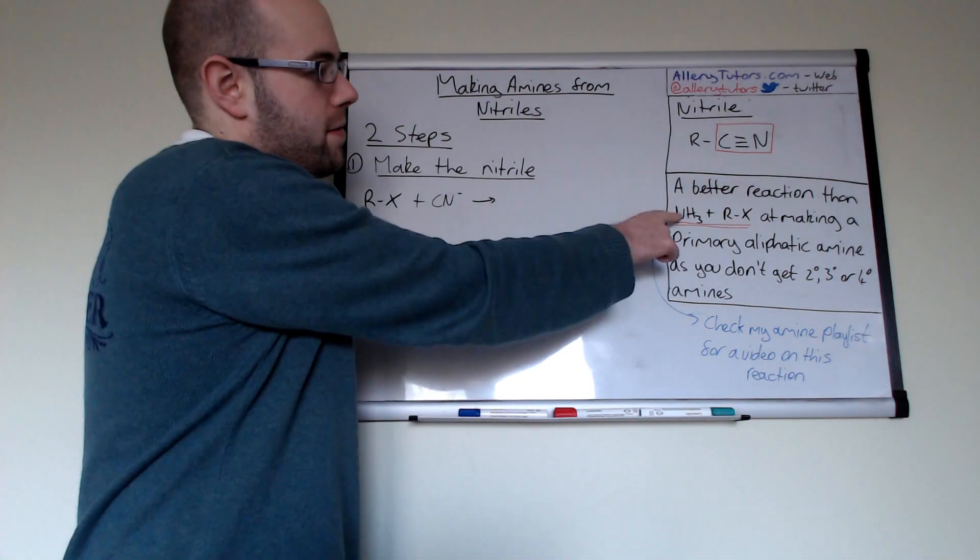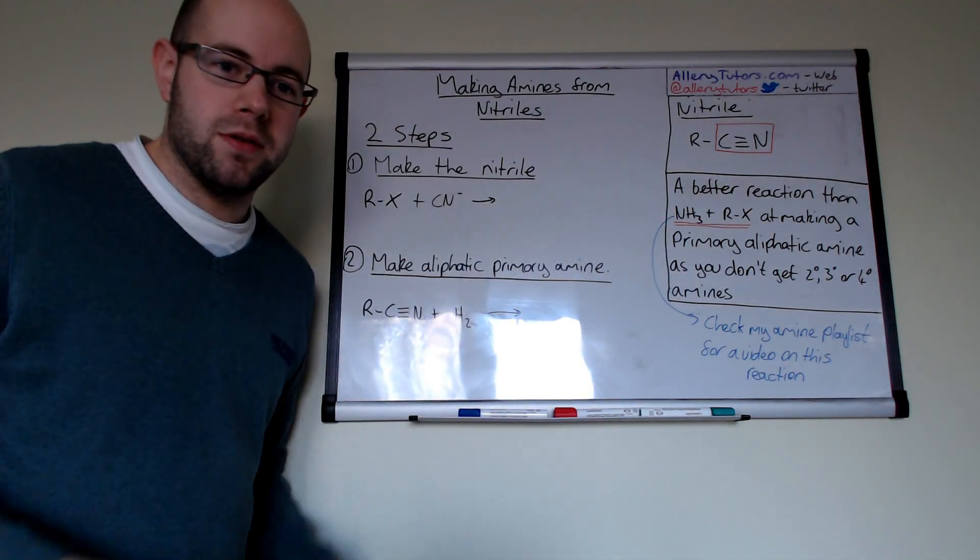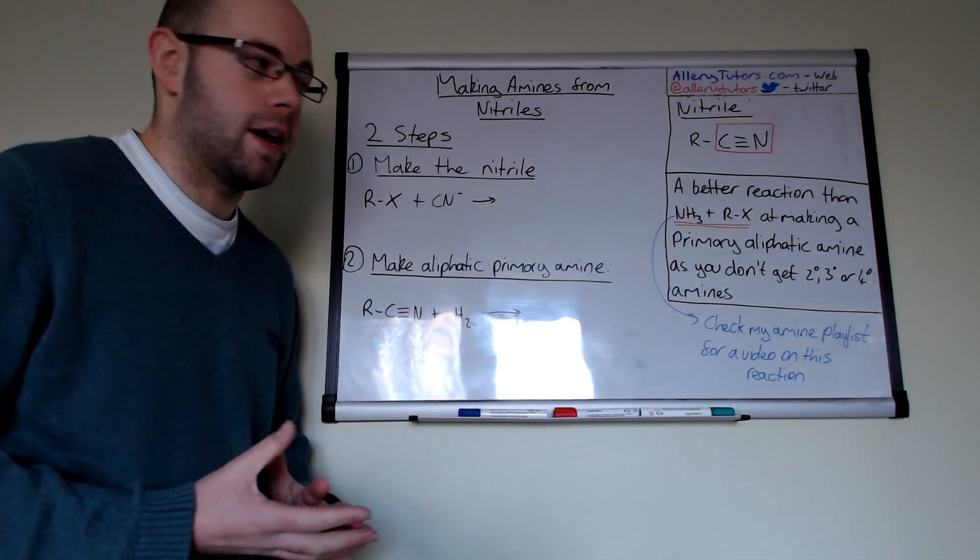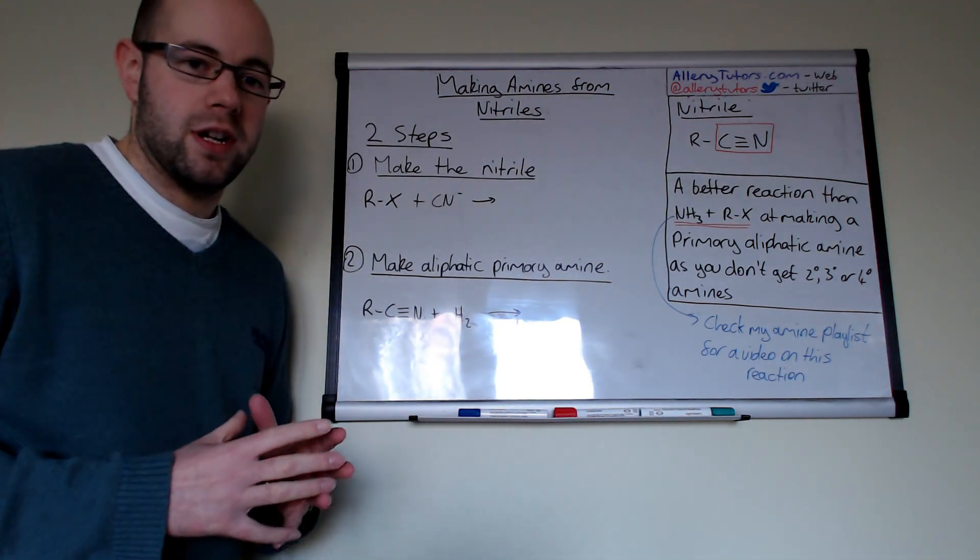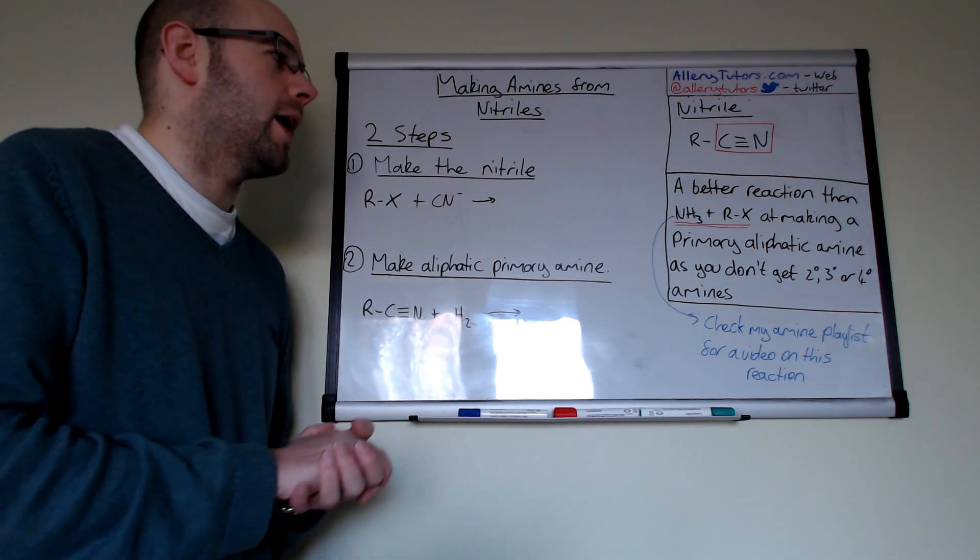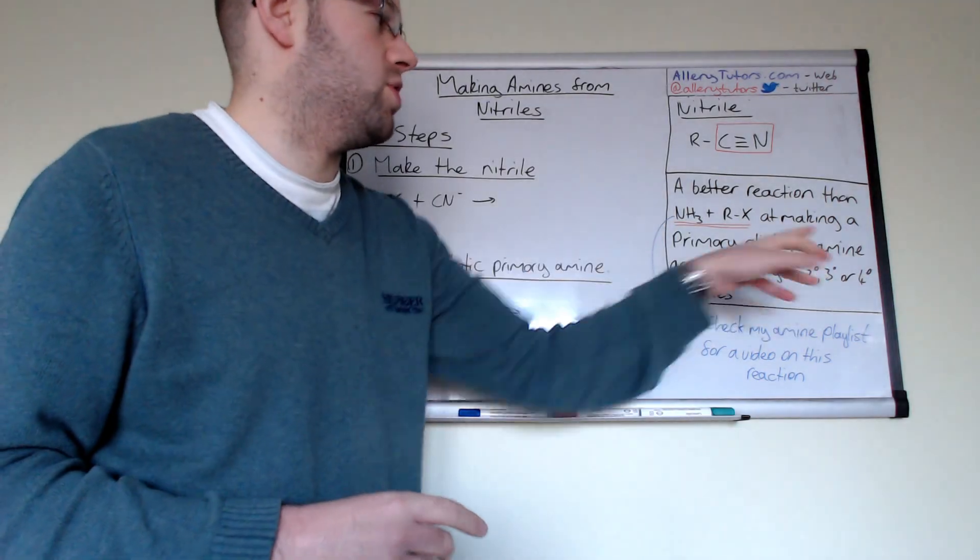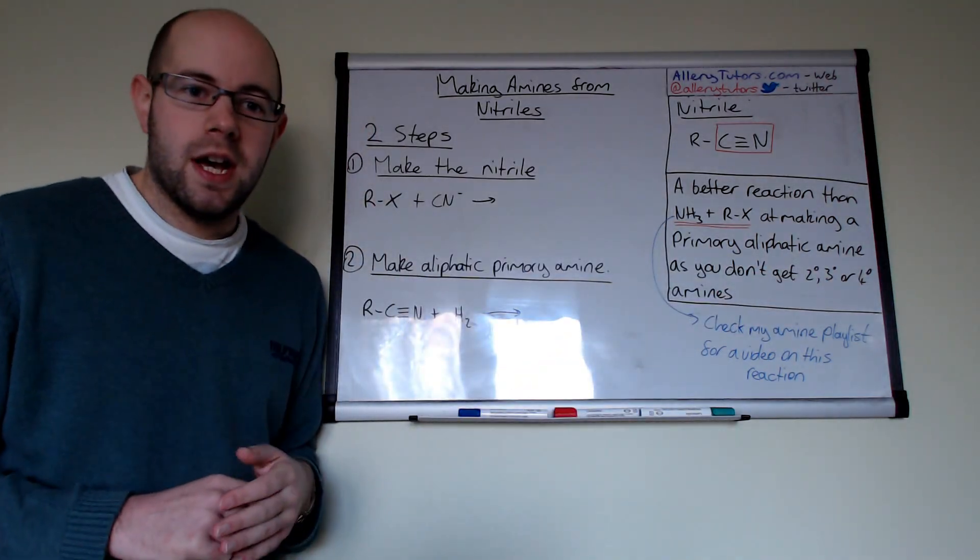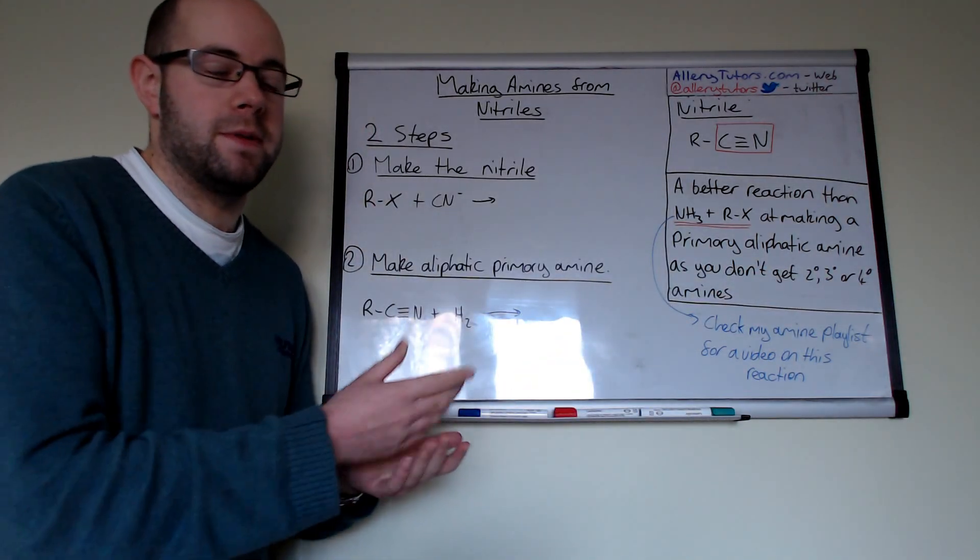because if we compare it to a reaction where we use ammonia and a halo alkane, this reaction is not very specific in terms of the type of amine that you want to produce because it produces secondary, tertiary and quaternary salts as well, so amines as well.